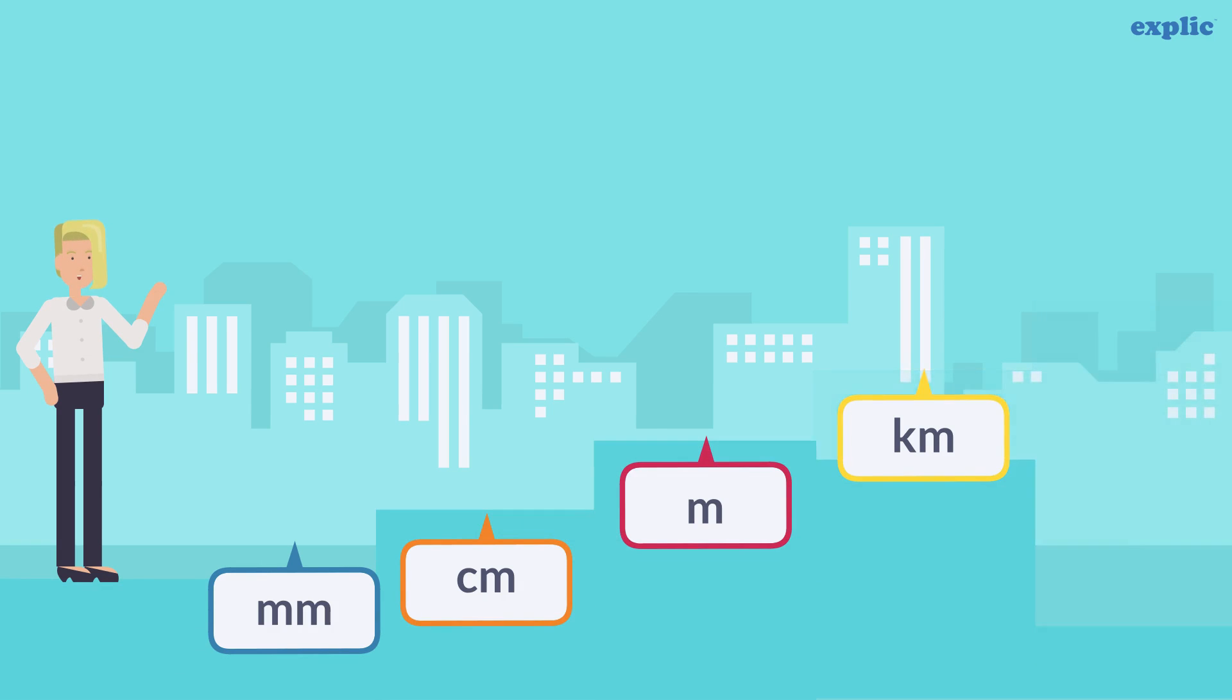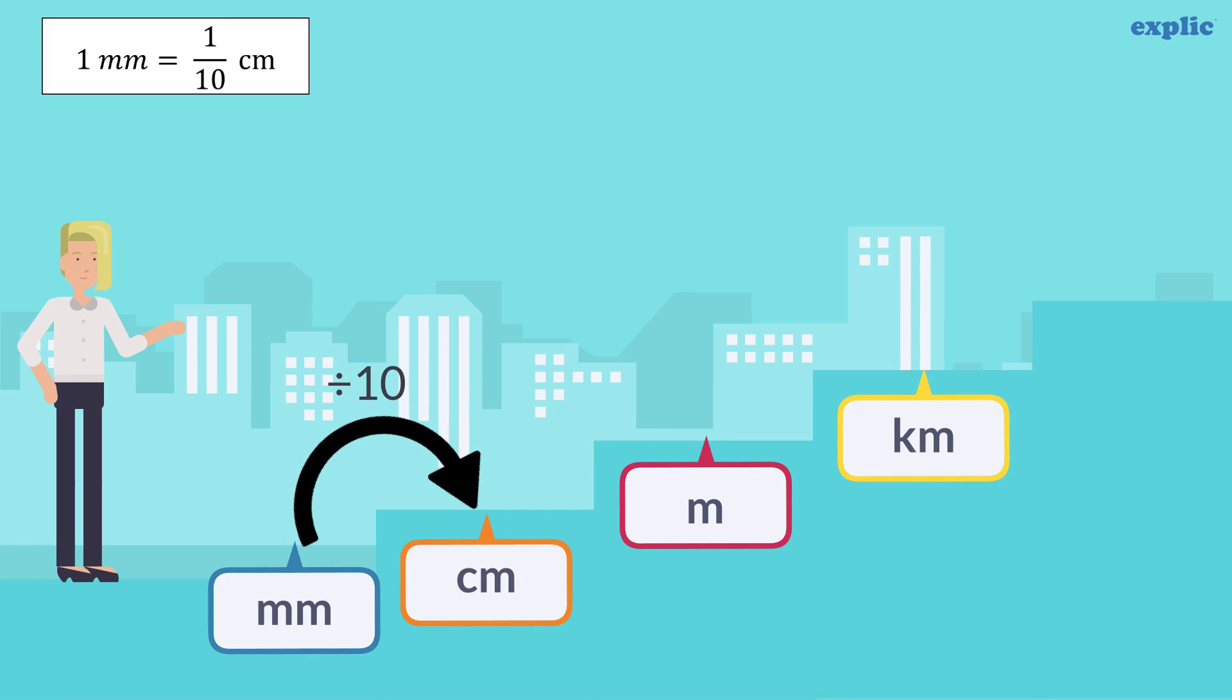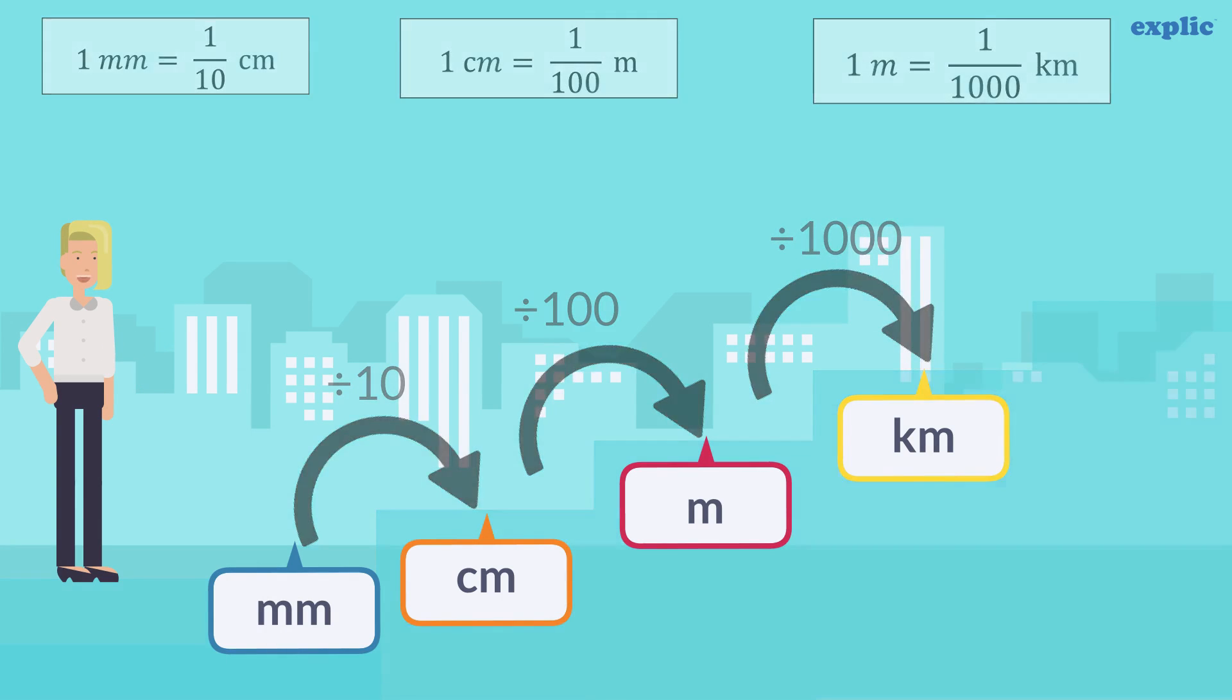To convert millimeters into centimeters, divide by 10. To convert centimeters into meters, divide by 100. Similarly, to convert meters into kilometers, divide by 1000. In reverse...